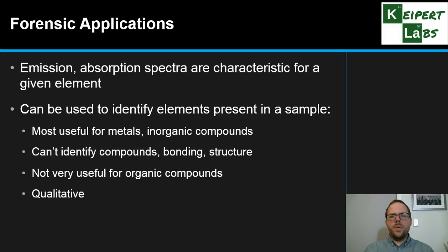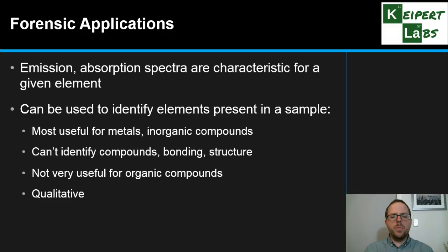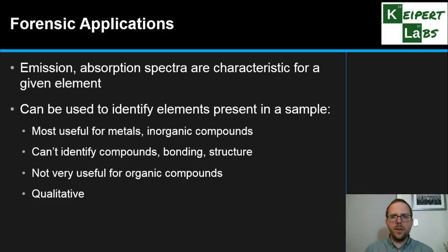The way those atoms are connected together is what gives a compound its characteristic properties and distinguishes an alkane from an alkene from an alkanol. That's why this technique is only particularly useful for inorganic compounds or identifying heavy metals or trace metals. It's also a qualitative technique — we're only looking at what wavelengths are present or not present, not exactly how much light has been given off. With atomic absorption spectroscopy, we can prepare standards, look at how much light is absorbed, and construct a calibration line to quantify it. But this technique doesn't work that way.